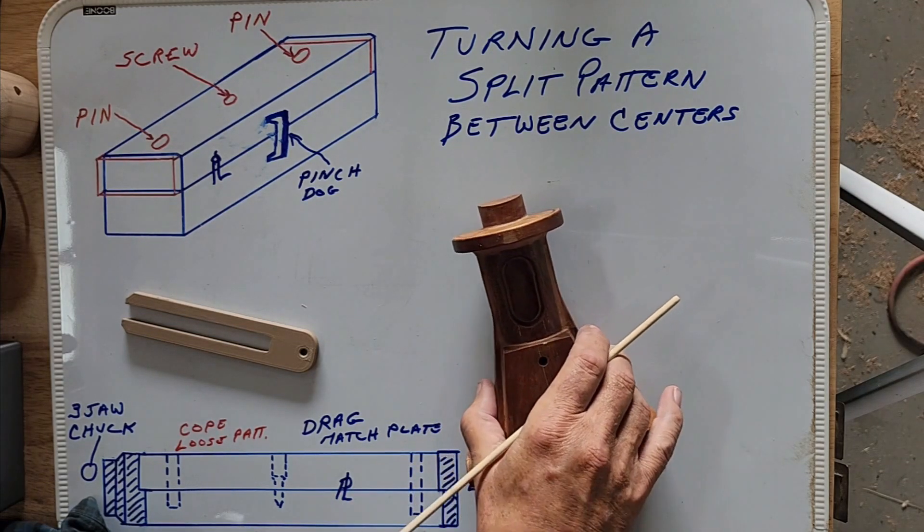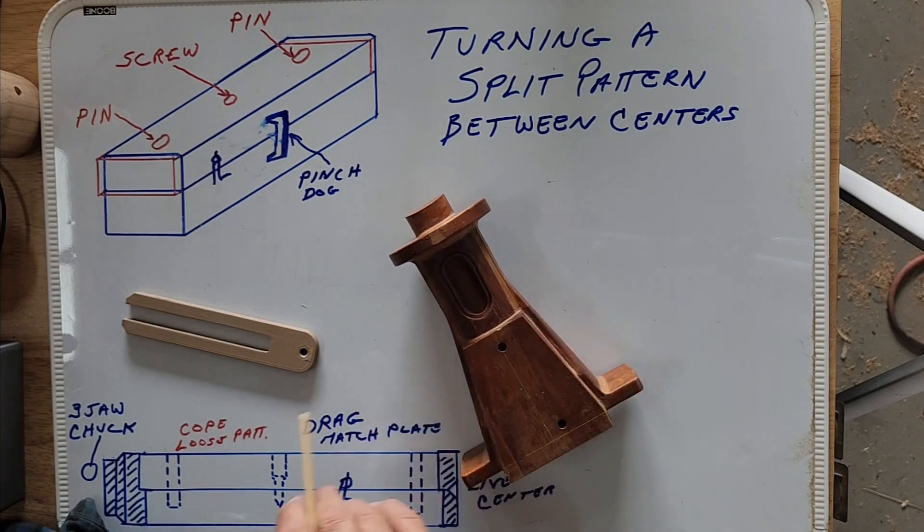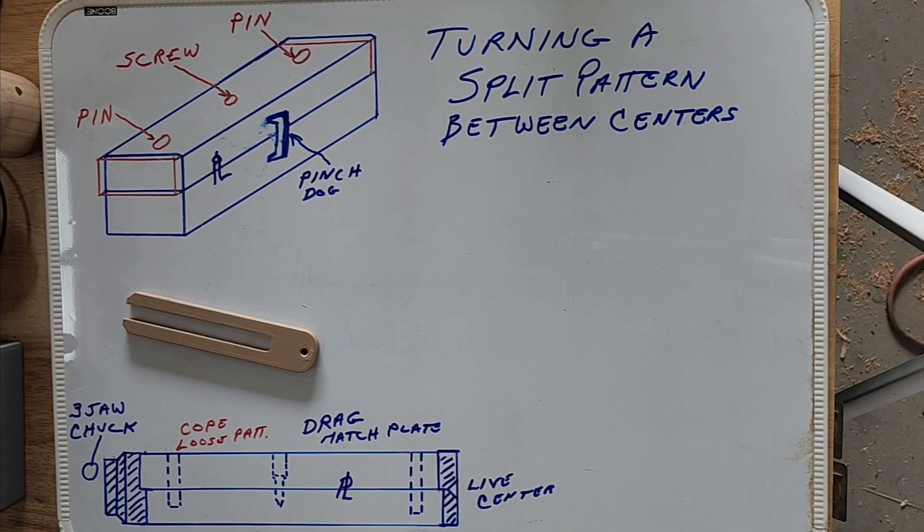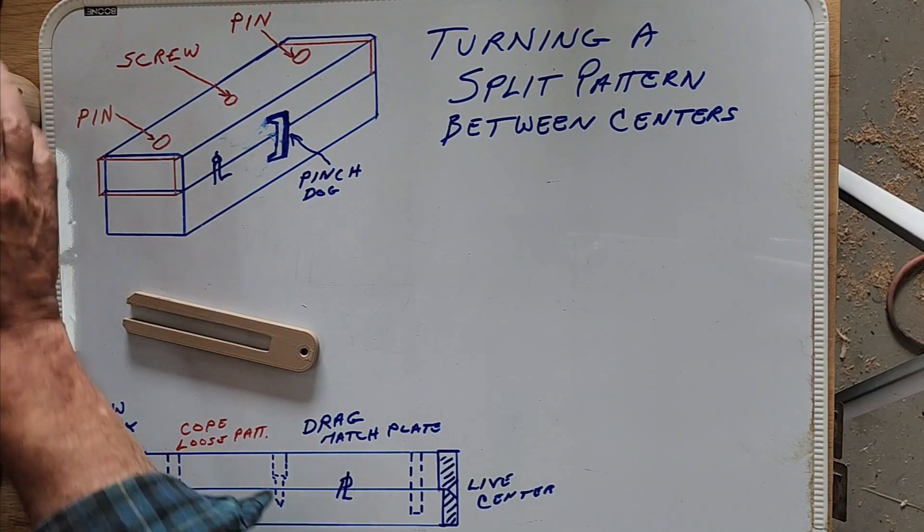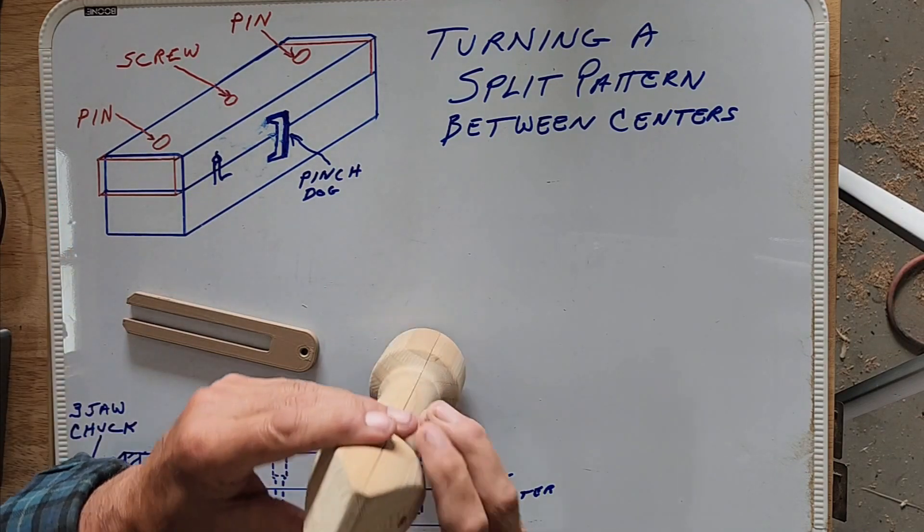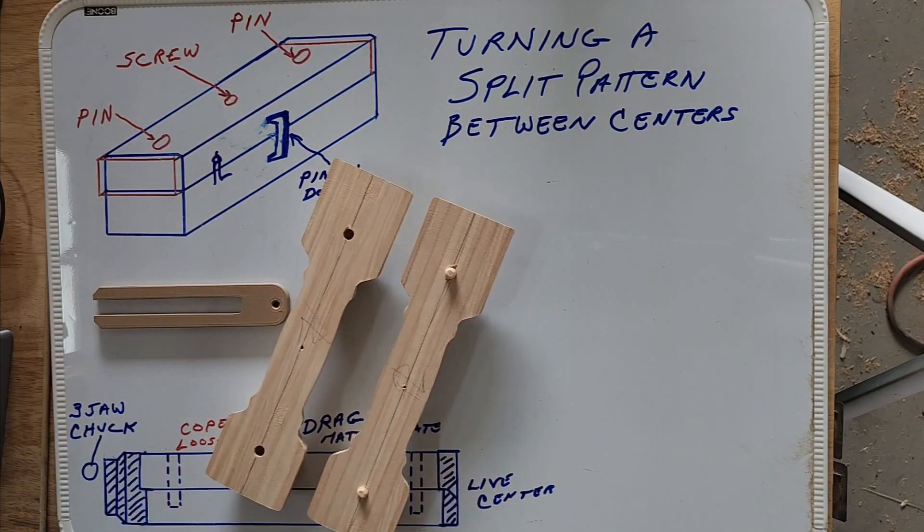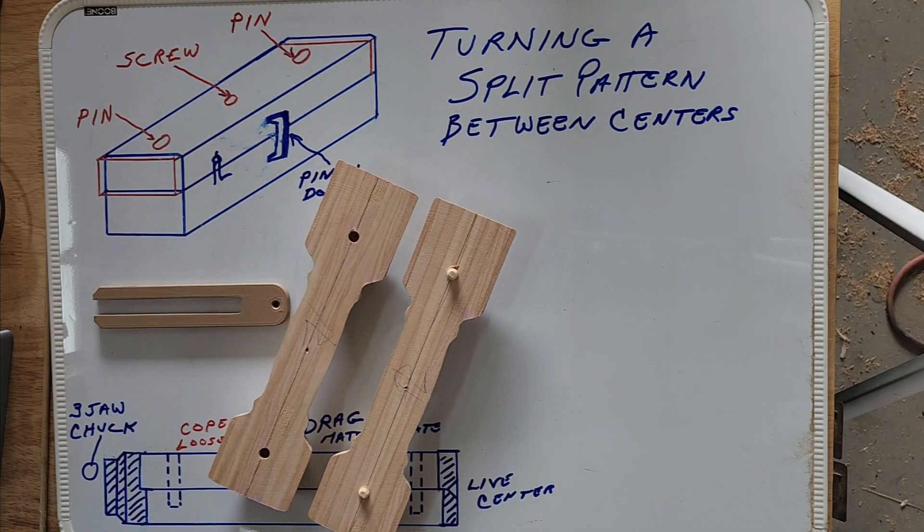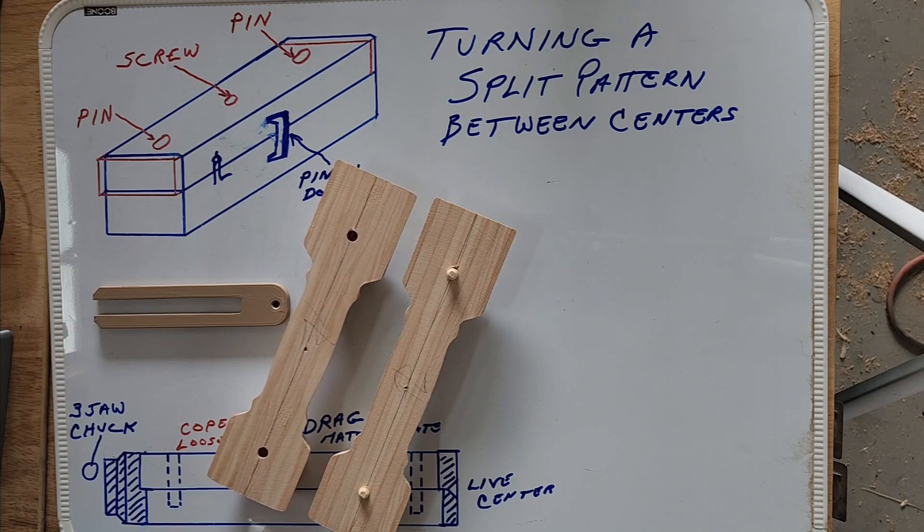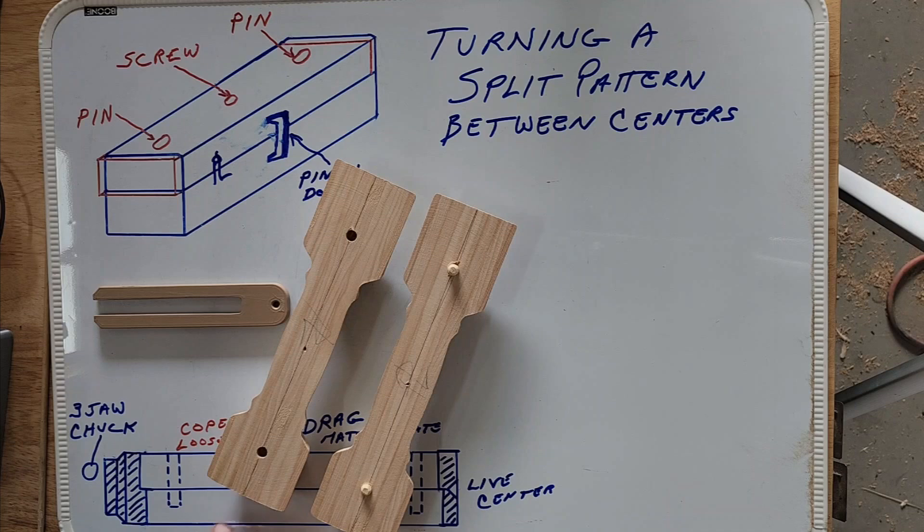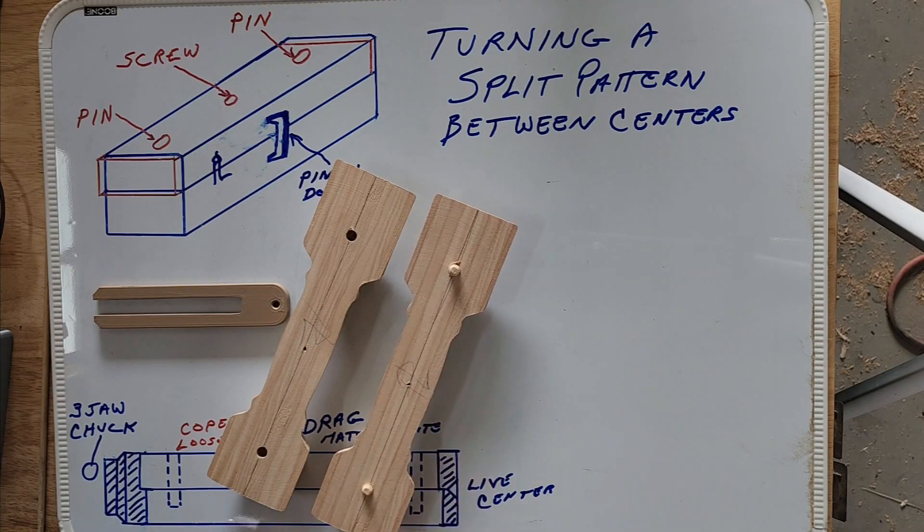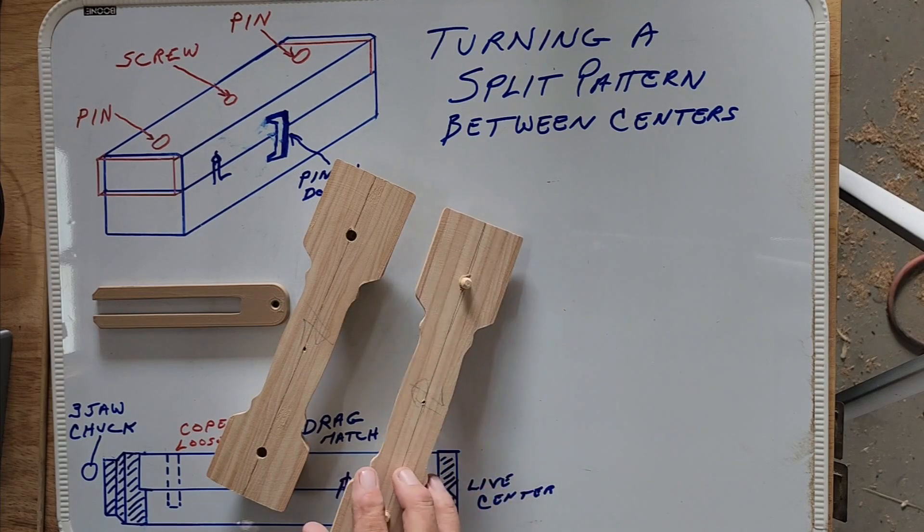Turning between centers this way is nice because when you turn between centers and you don't put a piece of paper in there, your parting line comes clean and you don't have an issue with anything in there. It comes apart real easy. Take the screws out of the centers and one screw out of the pattern and you're good to go. No cleanup. That's a quick simple way to do stuff with turning between centers.